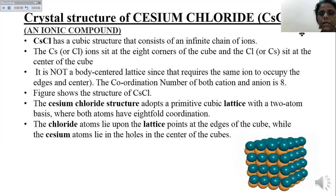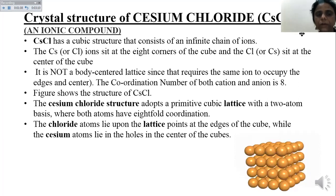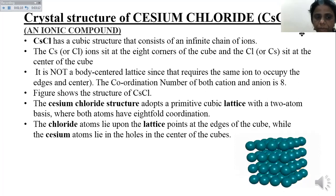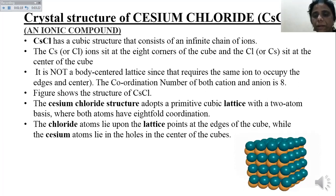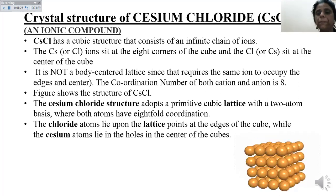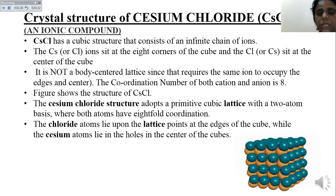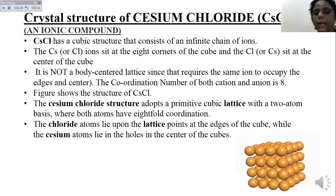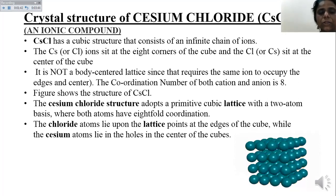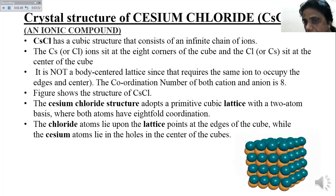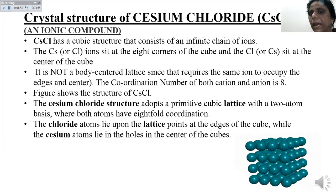It is not a body-centered lattice in the strict sense since that requires the same atom to occupy the edge and corner. The coordination number of both cation and anion is eight. The CsCl structure is also described as a primitive cubic lattice with a two-atom basis, where both atoms have eight-fold coordination. The chloride atoms lie upon the lattice points at the edges of the cube while the cesium atom lies in the holes at the center of the cube.